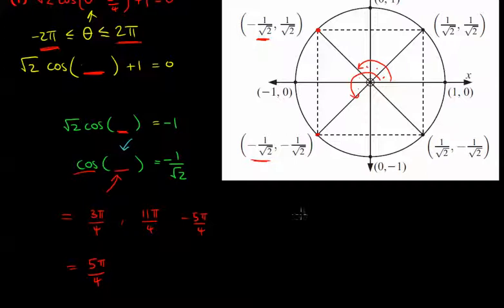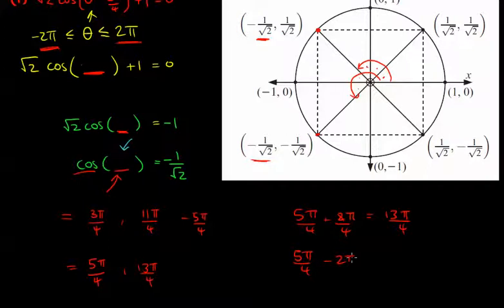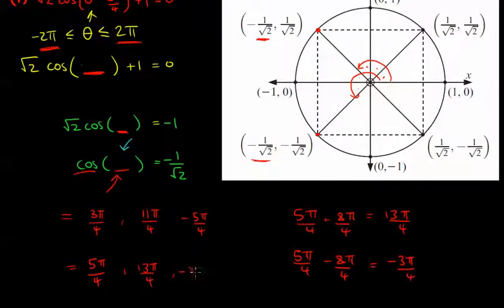Now the second one we got — remember the 5π over 4 — let's add 2π to that. 2π is 8π over 4 as a common denominator. 5 plus 8 is 13, so that gives 13π over 4. So we could also have 13π over 4. Or let's do 5π over 4 take away 2π — that's the same as 8π over 4 — 5 take away 8 is minus 3π over 4. So it could also equal minus 3π over 4.